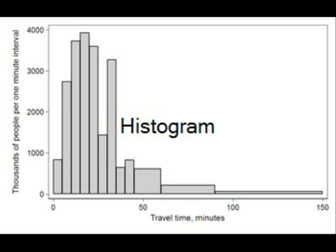A histogram is a diagram consisting of rectangles whose area is proportional to the frequency of a variable and whose width is equal to the class interval.